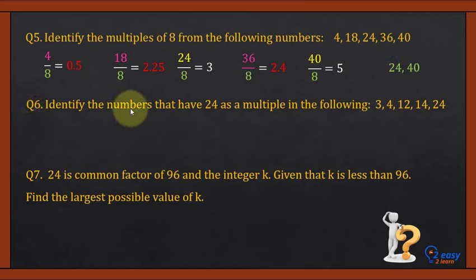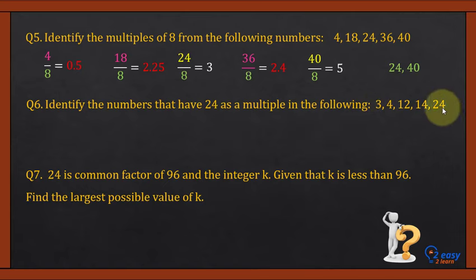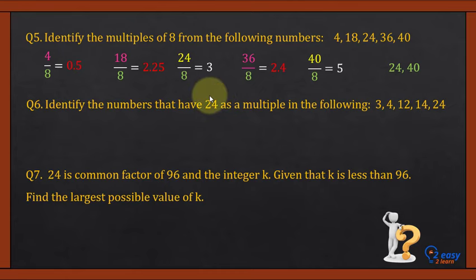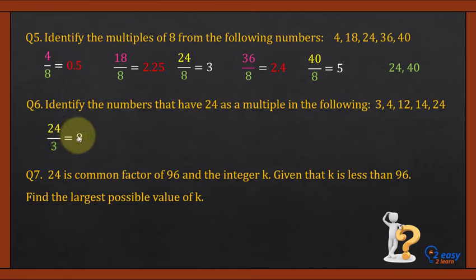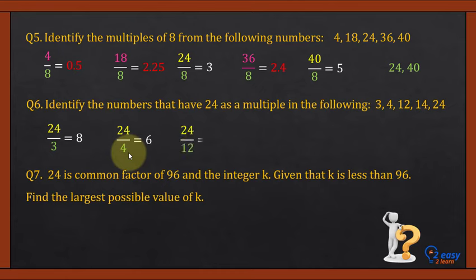Question 6: Identify the numbers that have 24 as a multiple. This means we find which numbers from the list completely divide 24 — those will be factors of 24, and 24 will be a multiple of those numbers. 24 ÷ 3 = 8, so 24 is a multiple of 3. 24 ÷ 4 = 6, an integer, so 24 is a multiple of 4. 24 ÷ 12 = 2, an integer, so 24 is a multiple of 12. 24 ÷ 14 gives a decimal answer, so 24 is not a multiple of 14.